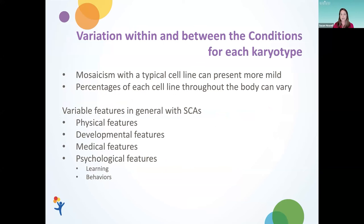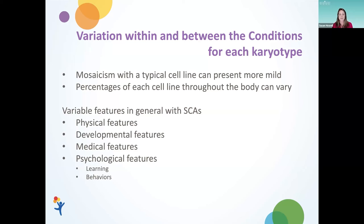We can see a lot of variation within and between conditions for the various karyotypes in an individual with mosaicism. Generally, when mosaicism is present with a typical cell line, the condition can present more mildly, with the abnormal karyotype being less obvious in symptoms. But we can also see a lot of different percentages of each cell type throughout the body, and mosaicism with atypical cell lines — in which there are no typical cells — can sometimes result in more symptoms of a condition.